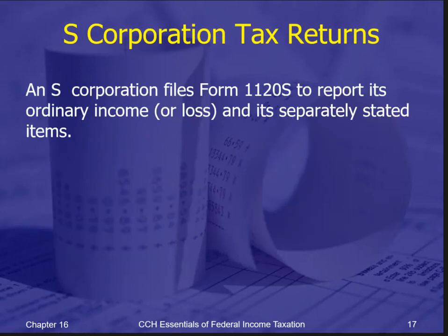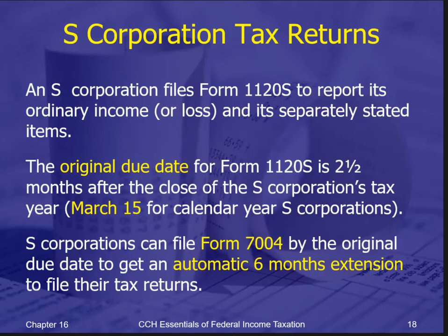The S-Corporation files Form 1120S — 1120 for a C-Corporation and 1120S for S-Corporations. It is due two and a half months after the year end, and you can get a six-month extension with Form 7004. That is the same form as partnerships — it is a multi-purpose extension form where you check which entity you are filing for.